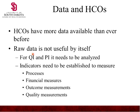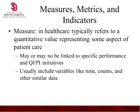Raw data is not really useful by itself. For quality improvement and process improvement it needs to be analyzed. Indicators have to be established to measure processes, financial measures, outcome measurements, and quality measurements. Quality improvement tends to be more clinically focused, while process improvement tends to be non-clinically focused. You will have QI and PI teams in many hospitals, though in smaller hospitals these are all one.